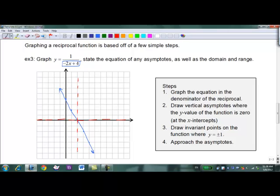Invariant points where the function equals 1 or negative 1. So there the y value is 1 if we think about our y values. And there the y value is negative 1. So notice that it's not a perfect hash mark that it hits the invariant points. That's fine.